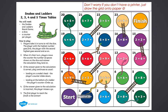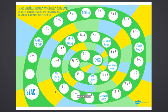Then we've got a snakes and ladders game. Don't worry about printing — you could just draw it out quickly onto some paper. There are instructions to help you, but I'm sure you've all played snakes and ladders before. It's a three times table version: you roll the dice, move however many spaces you get, and if you land on certain squares you have to say the answer to a times table question, like five times three.